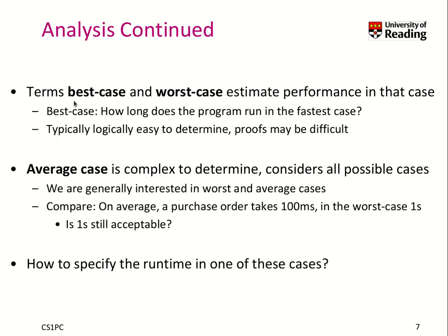We talk about best case and worst case to estimate performance. The best case describes how long our program runs in the fastest scenario, and while it can be easy to determine, the proofs can be difficult. The average case is typically complex to determine and must consider all possible cases. We are generally most interested in the worst and average case. Consider an online shop purchase order: on average it takes 100 milliseconds, which feels fast, but in the worst case it takes one or even ten seconds. Would you as a customer be willing to wait that long? That's why worst case is particularly relevant for interactive usage.